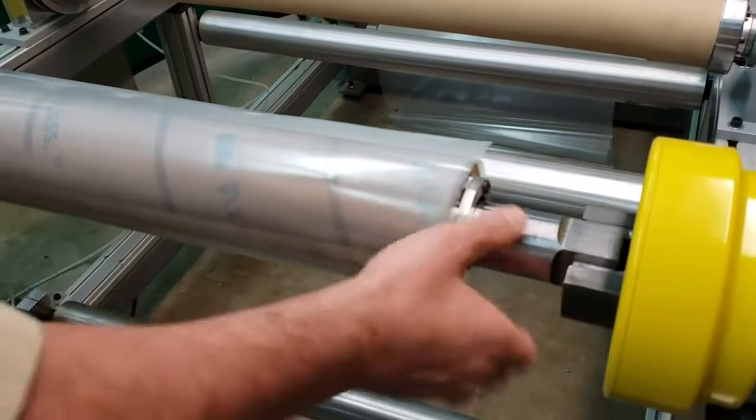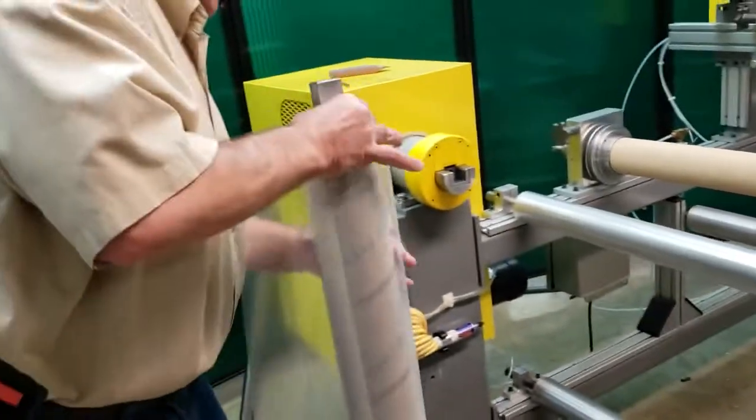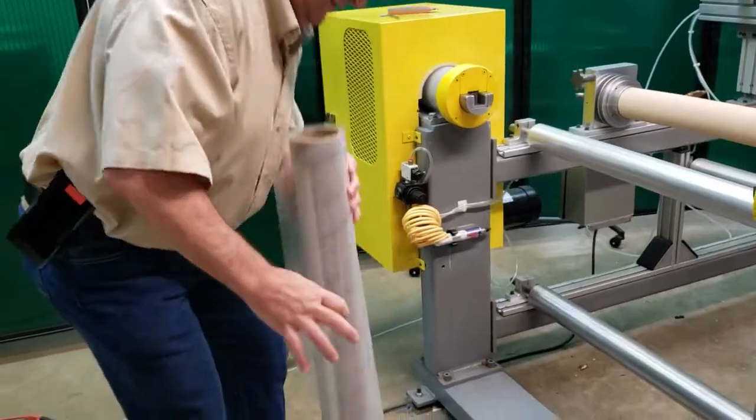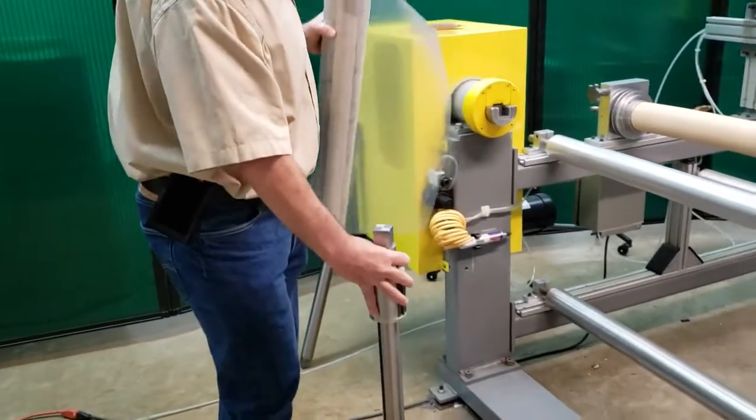So we open up the safety chucks, pull the roll out, and see the roll slides right off the mechanical chuck.